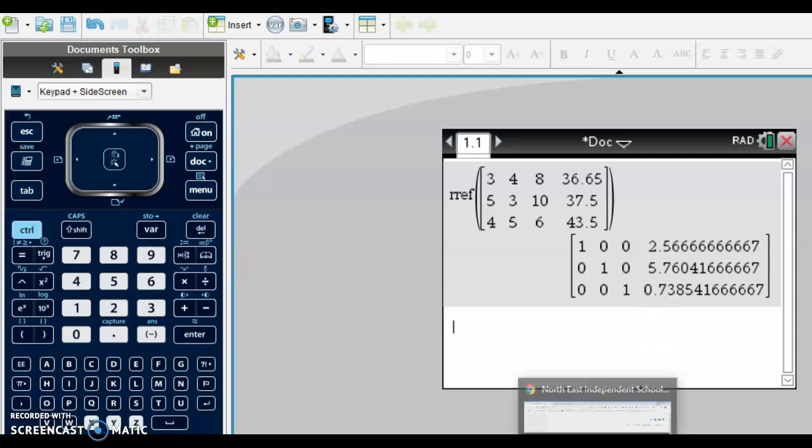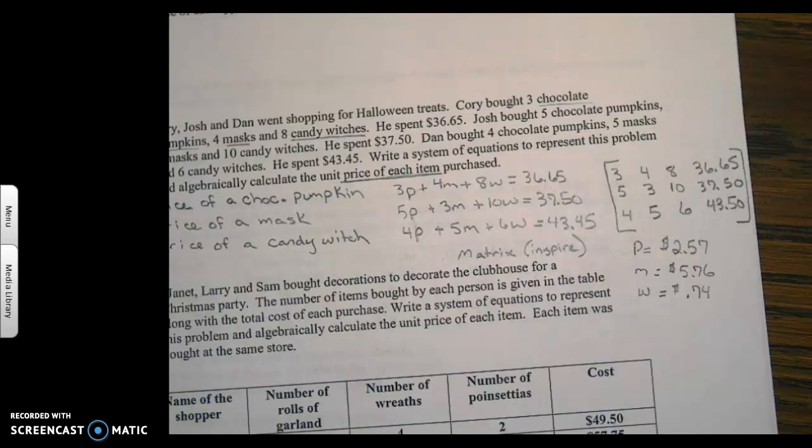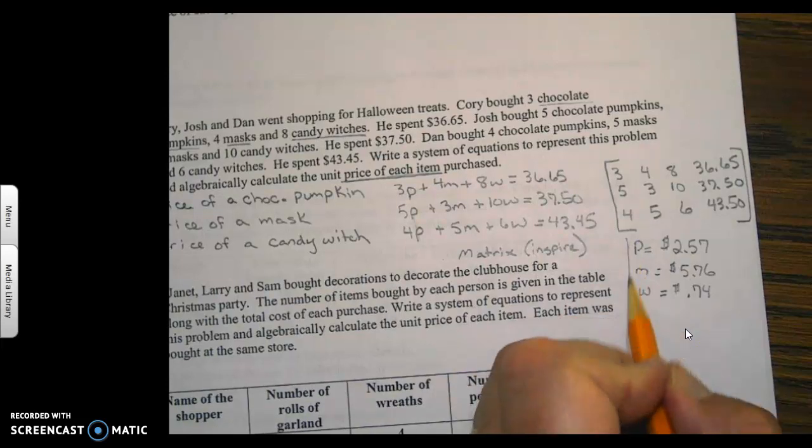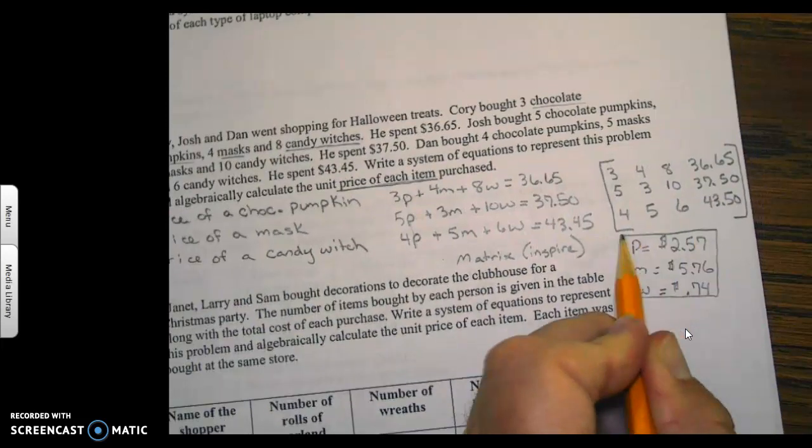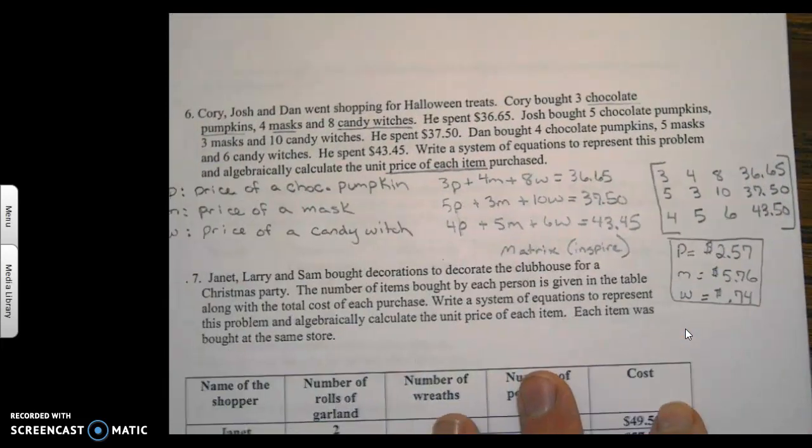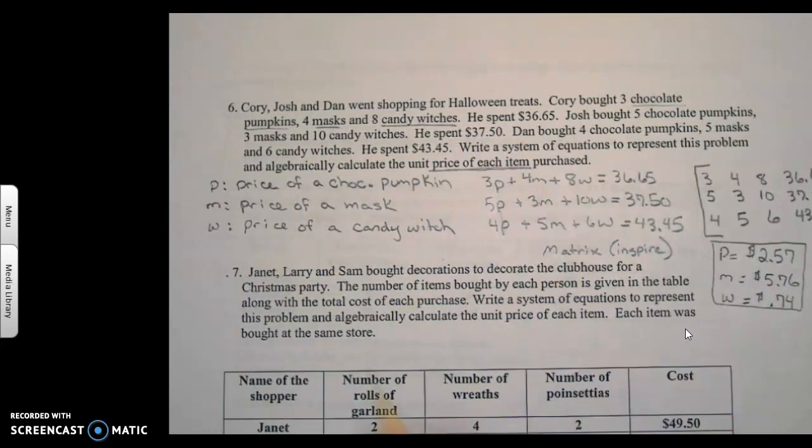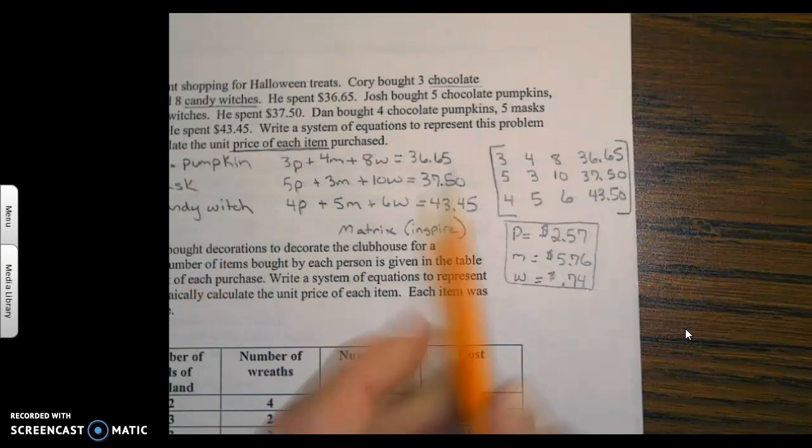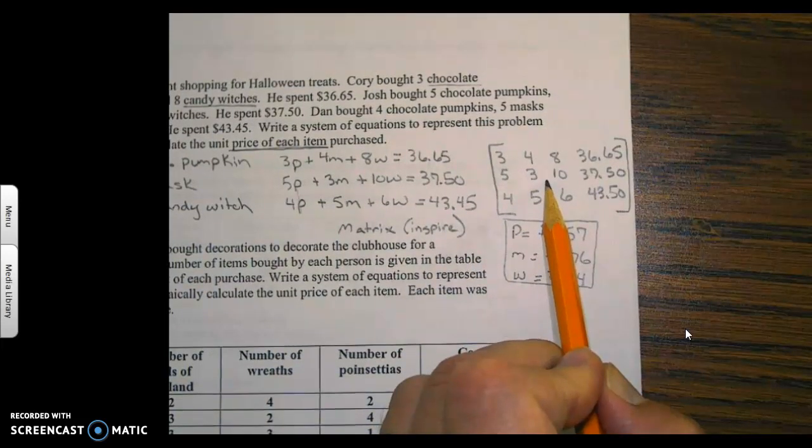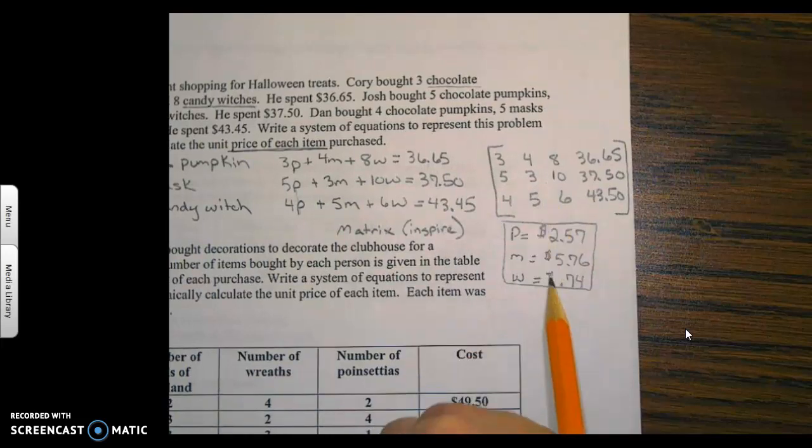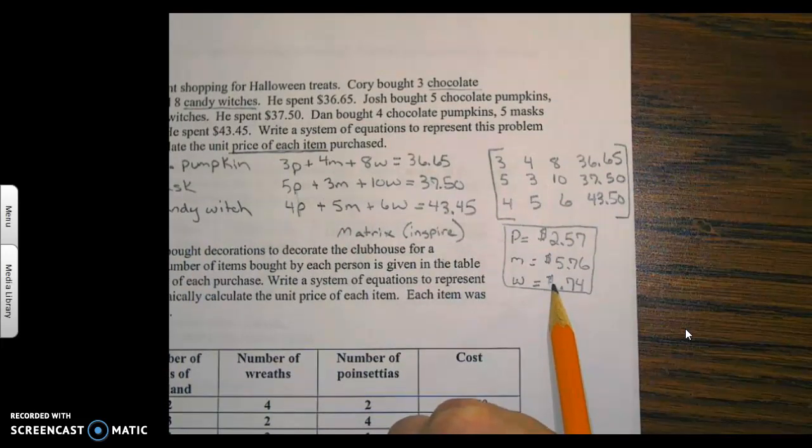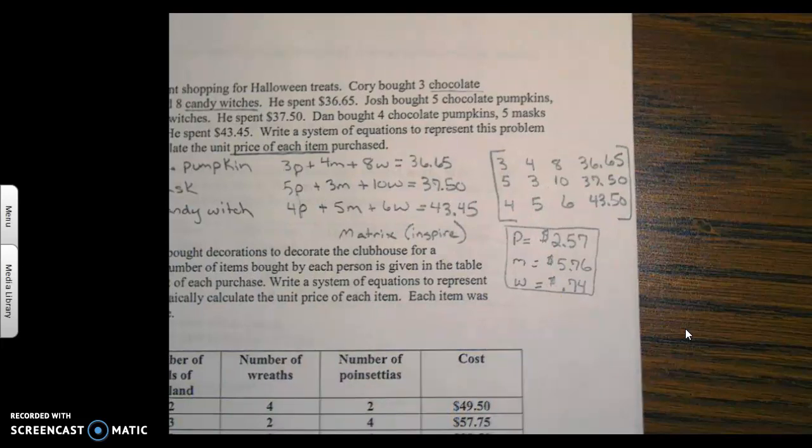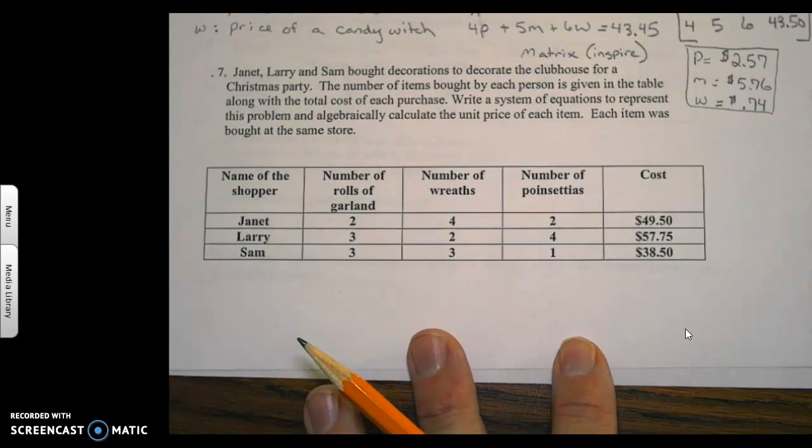Let's take a look at the paper again. For some of these problems they're already set up with your variables, and some of them you have to come up with them on your own. This is formulating, creating the equations. Then you create your matrix, and I do want to see your matrix, and then you will put that in your calculator and get the price for each item.